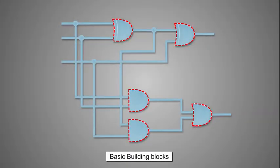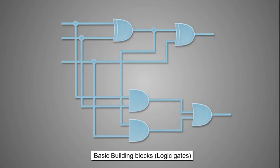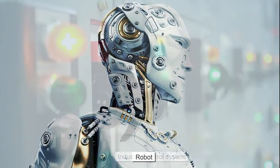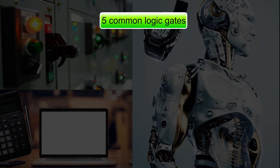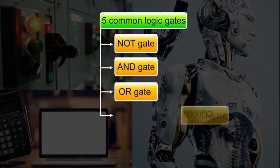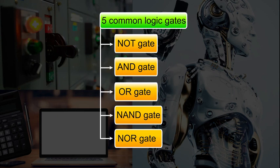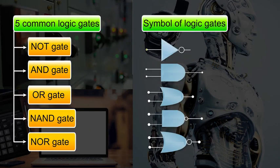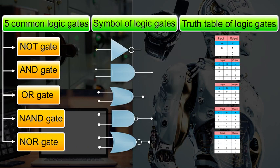Let us now learn about some basic building blocks of digital electronics called logic gates, which process digital signals in a specific manner. Logic gates are used in calculators, digital watches, computers, robots, industrial control systems, etc. The five common logic gates used are NOT, AND, OR, NAND, and NOR. Since they control the flow of information through logic, they are known as logic gates. Each logic gate is indicated by a symbol, and its function is defined by a truth table that shows all possible input logic level combinations with their respective output logic levels.